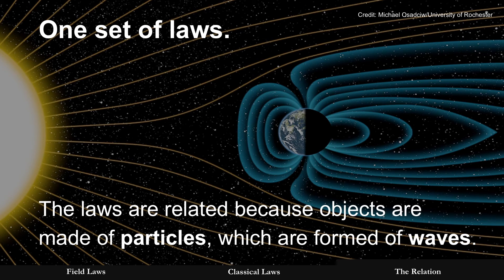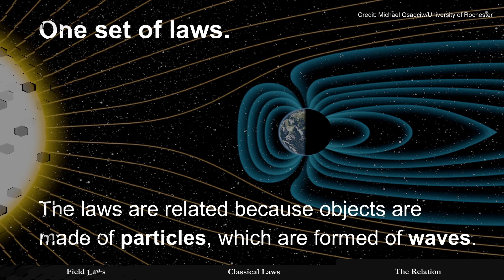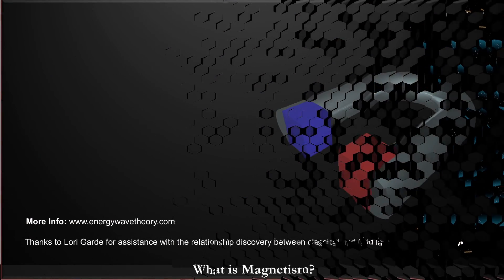And that's it. One set of laws. And really, really fascinating thing here is that the laws are related because objects are made of particles which are formed of waves. But you have to get it down to the equations that model where's that commonality. It's an electron at the electron's radius, and once you use that they converge. Thank you and have a wonderful day.